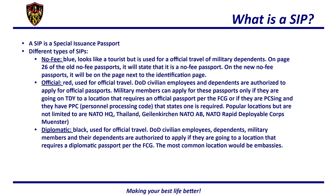The SIPs that we see most are no-fee passports, which are blue in color and look a lot like a tourist passport. However, the difference is they are used for official travel of military dependents. On page 26 of the old no-fee passports, it will state that it is a no-fee passport. On the new no-fee passports, it will be on the page next to the identification page.